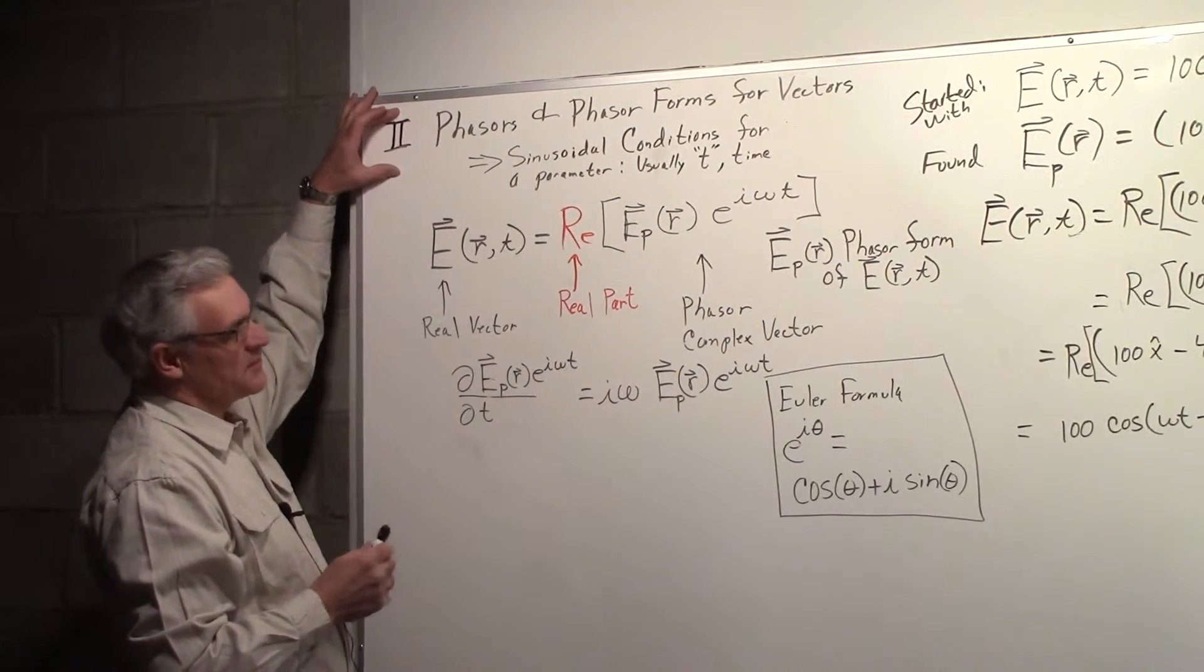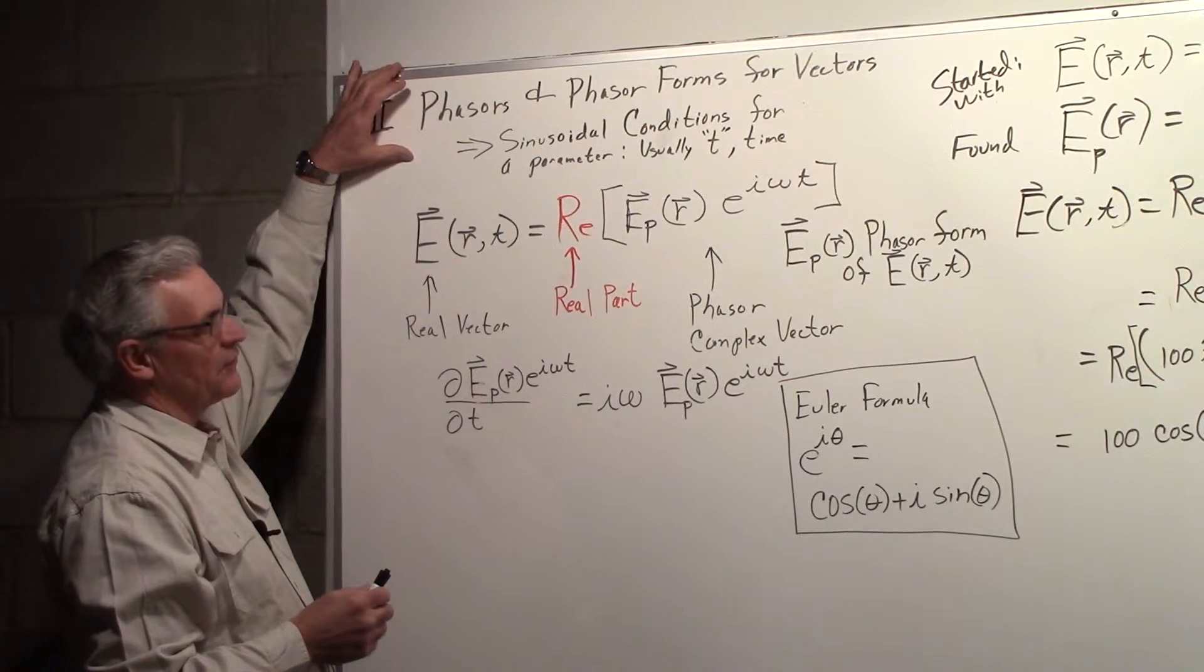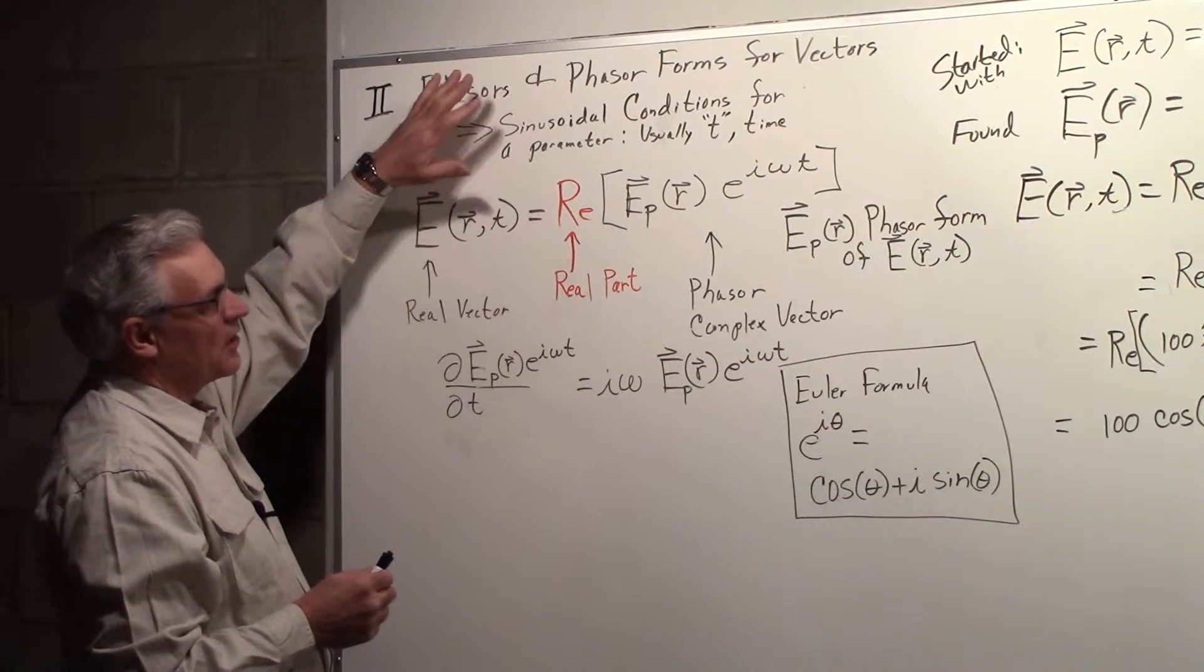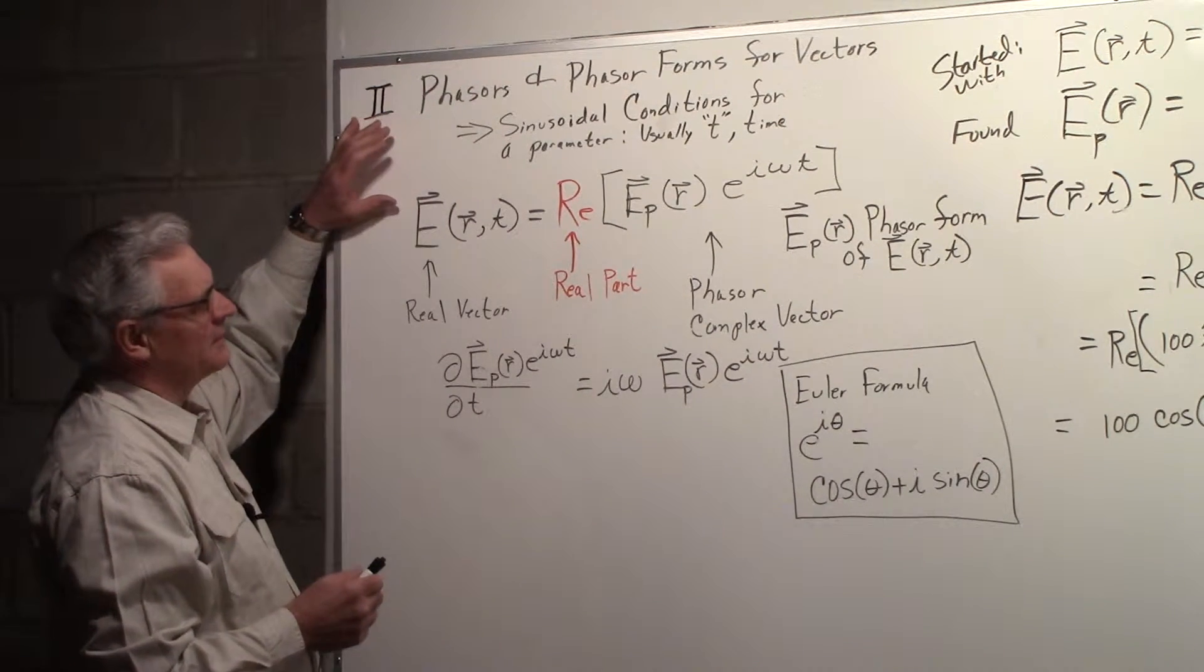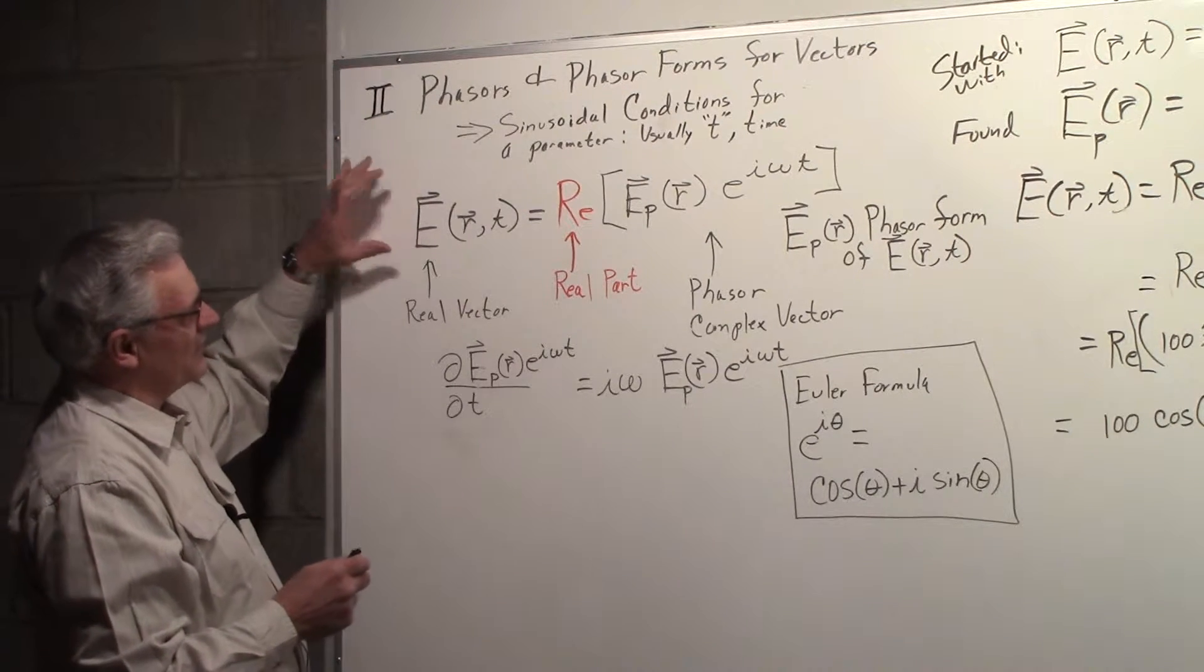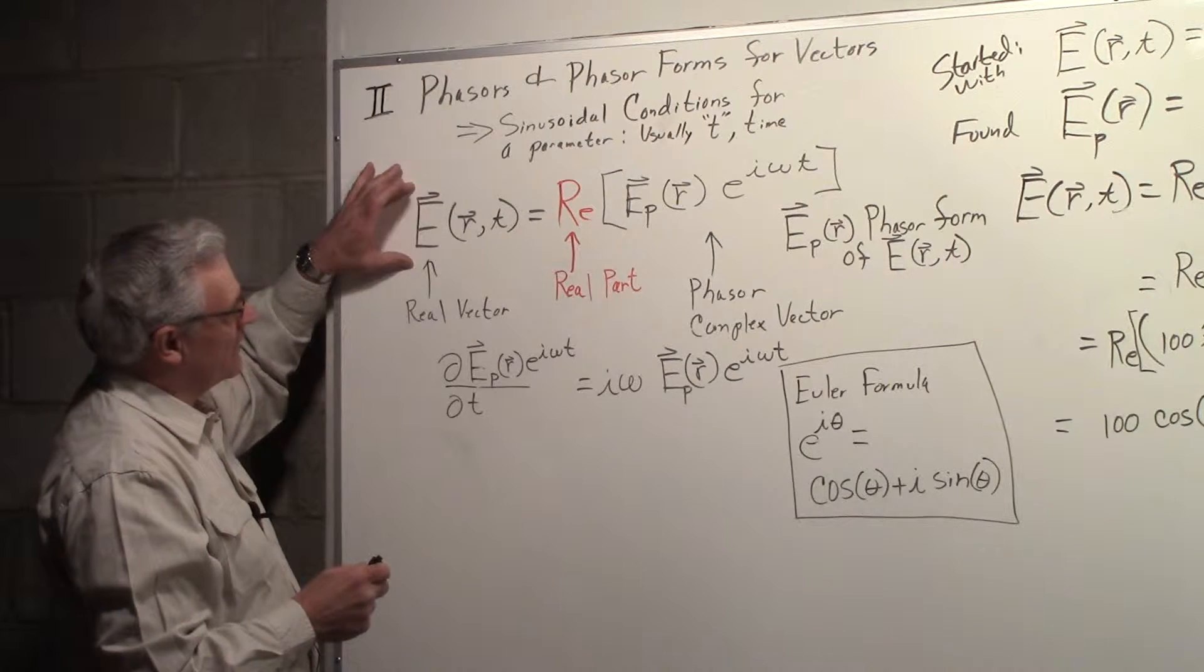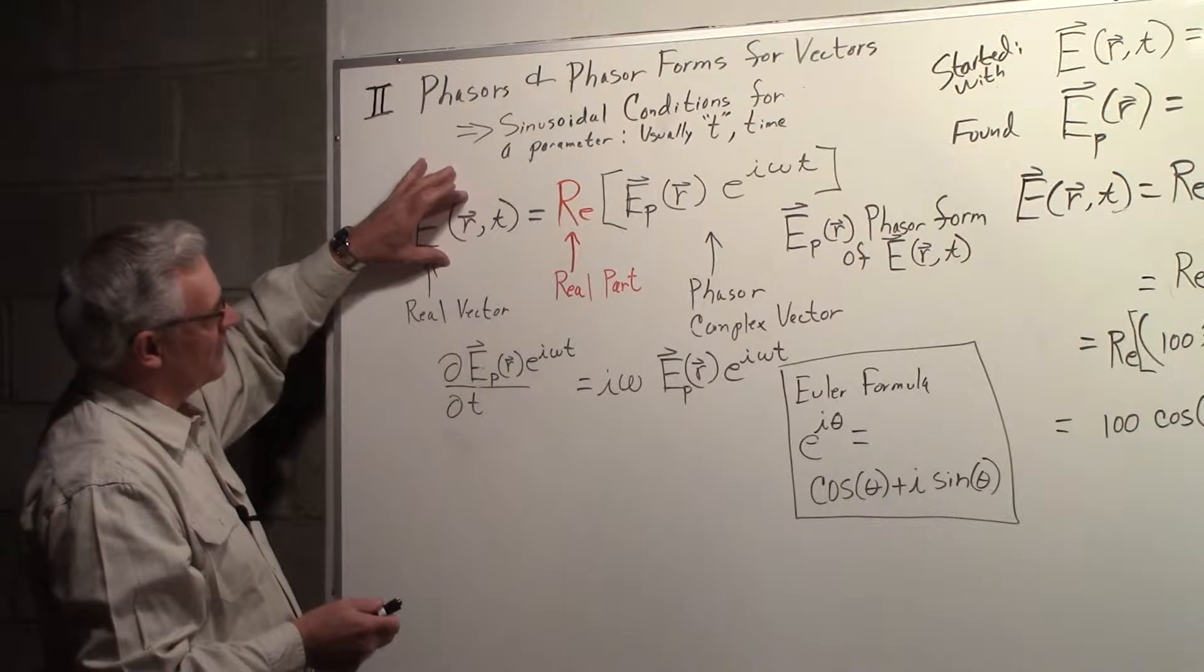We had a Part 1, this is Part 2 now: phasers and phasor forms for vectors. This was all covered in Part 1 and I don't want to go into much detail, but basically what we're talking about is we can have a real vector, and this might be electric field E as a function of position and time.